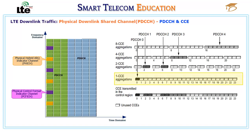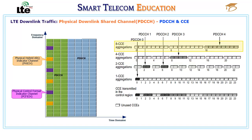Aggregation layer 1 uses 1 CCE and is the smallest block, used only in very good radio conditions. Aggregation layer 2 uses 2 CCEs and is usually the most common aggregation layer in normal radio conditions. Aggregation layer 4 uses 4 CCEs and is a robust allocation that can be used for signaling and control information. Aggregation layer 8 uses 8 CCEs and is the most robust allocation, used for users in very bad radio conditions or for control information.